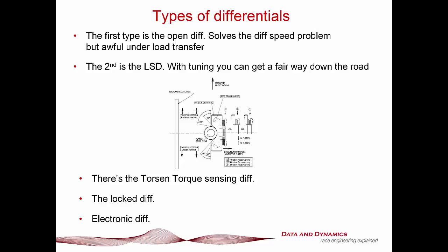The second type of diff you're going to be dealing with is a limited slip diff. Now, in particular, the clutch pack limited slip diff. And what you've got is that you've got a diff housing with some ramps that push against some clutches and you can adjust those ramp angles to adjust the appropriate locking ratio of the diff. It's not particularly sophisticated, but you can get a fair way down the road.